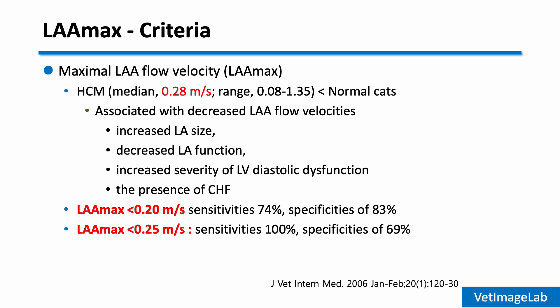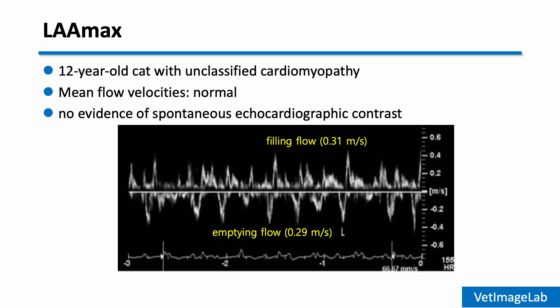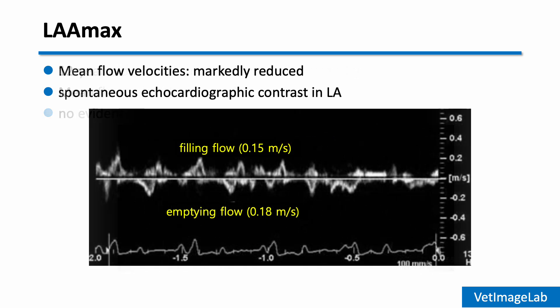These values are not used alone — we interpret them together with LA size and visual findings such as spontaneous echo contrast. In the first case, the LAA max is over 0.3 m/s, which is within the normal range, and there's no spontaneous echo contrast observed. In contrast, the second case shows severely reduced flow around 0.15 to 0.18 m/s, and spontaneous echo contrast is clearly visible. This cat is at high risk for thromboembolism.